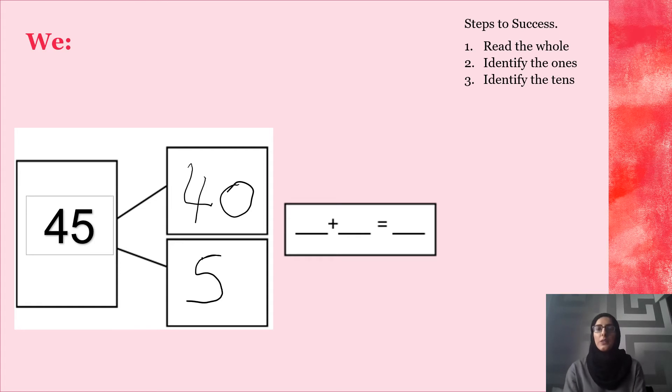Now, the last thing we're going to do is put our number together. On your whiteboard, put the number together. 1, 2, show me. Fantastic. Again, I can see you have written 40 and 5 equals 45. Well done.